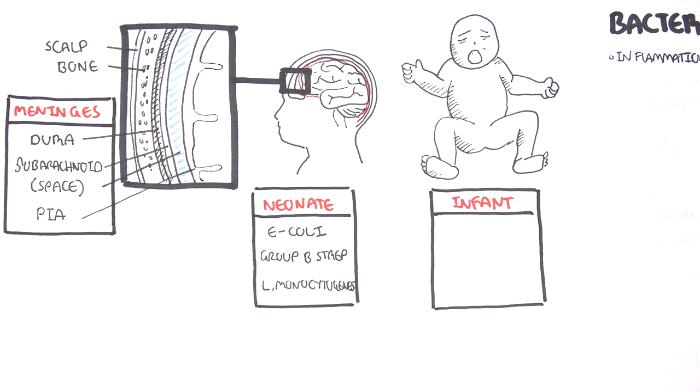In infants, there are usually different causative agents of bacterial meningitis such as Neisseria meningitidis, Haemophilus influenzae, and Streptococcus pneumoniae. These are the main causative agents also for young adolescents as well as young adults.